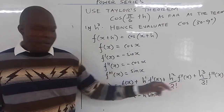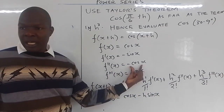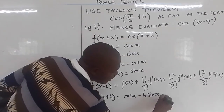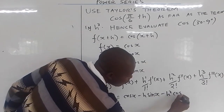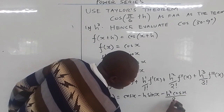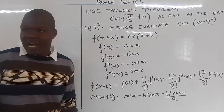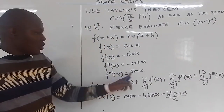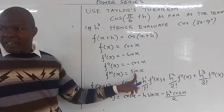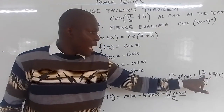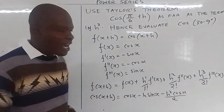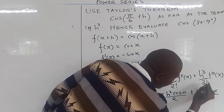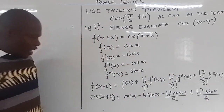Then f''(x) — what did you get? Negative cos(x). So this is negative cos(x) times h squared over 2 factorial. Then f'''(x) — what did you get? sin(x). So sin(x) times h cubed divided by 3 factorial, which equals plus h³·sin(x) over 6.